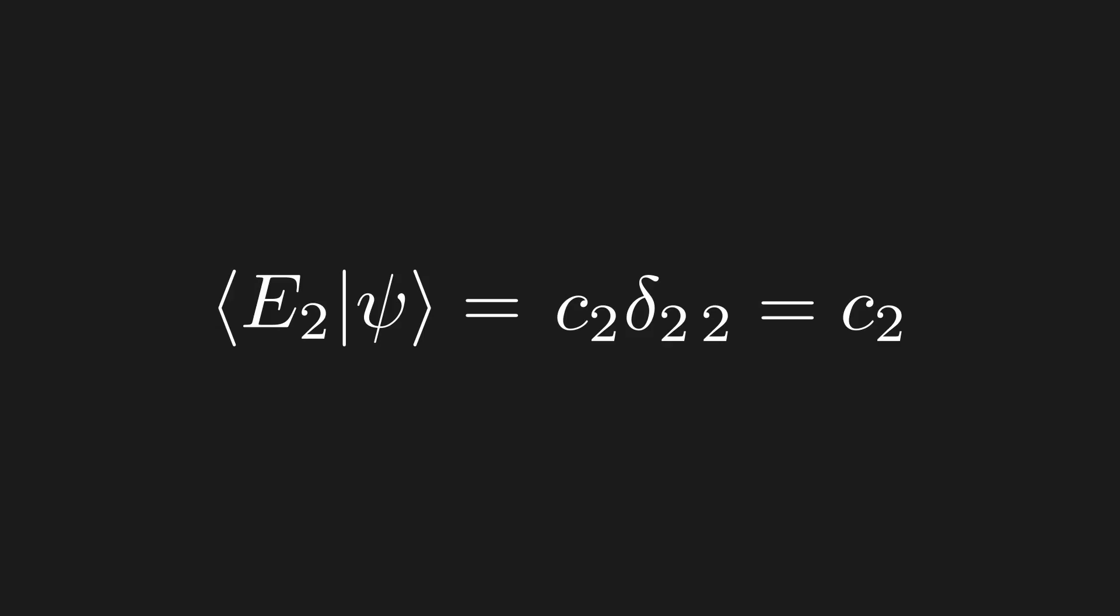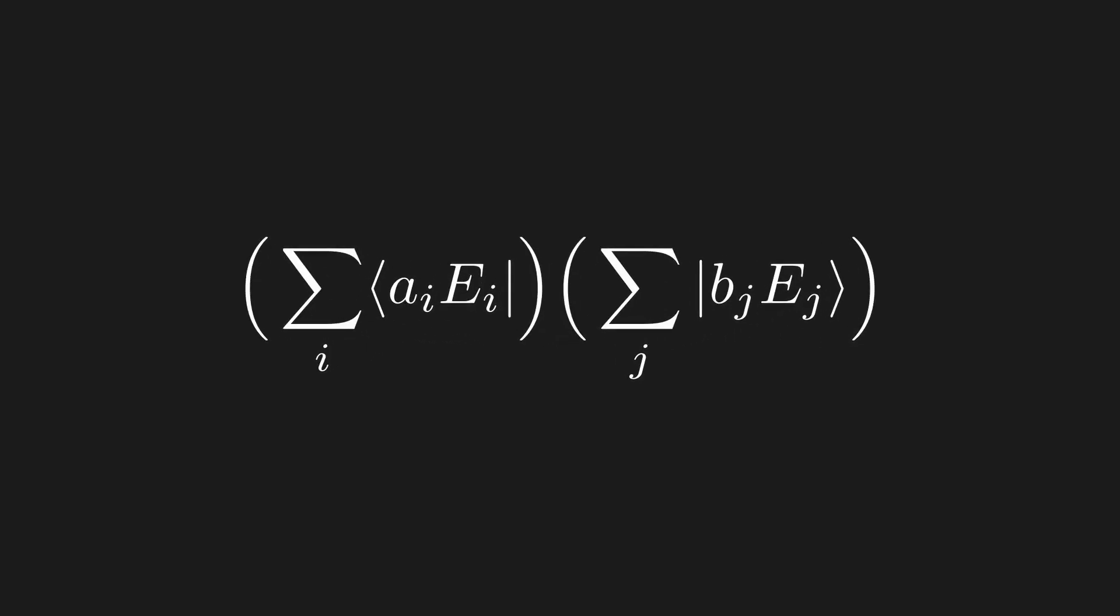It may have seemed excessive to use the Kronecker delta there, but trust me, it is a powerful tool to get used to. To see just how powerful it is, let's look at the inner product of two vectors. Like before, we expand both in an orthonormal basis. To simplify this, let's remember our rules.